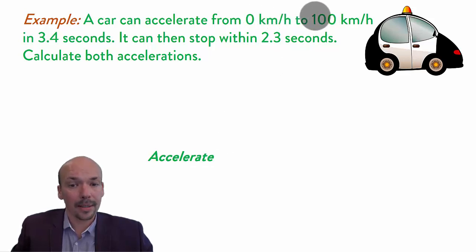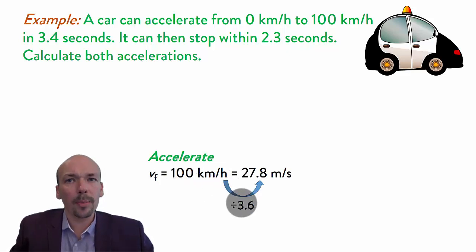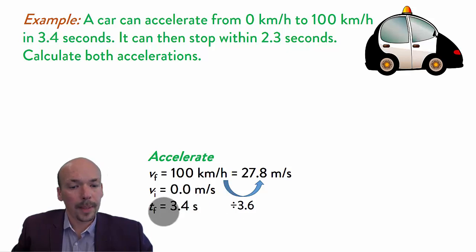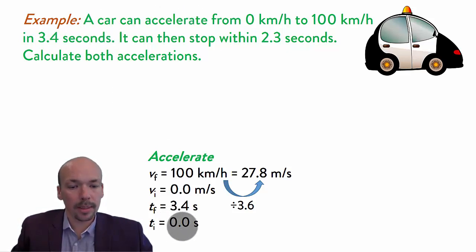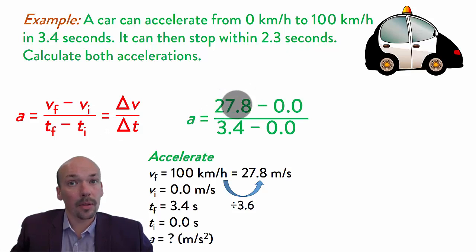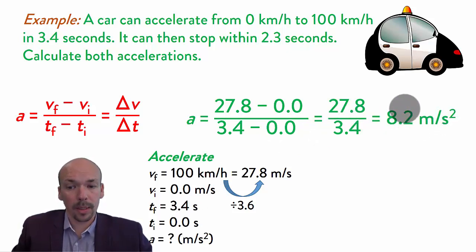We will start with the acceleration when gaining speed. The final velocity is 100 km/h divided by 3.6, which gives meters per second. The initial velocity is 0 meters per second. The final time is 3.4 seconds and the initial time is 0.0 seconds. So the acceleration equals 27.8 minus 0.0 divided by 3.4 minus 0.0, which gives an acceleration of 8.2 meters per second squared. That is the acceleration when speeding up.